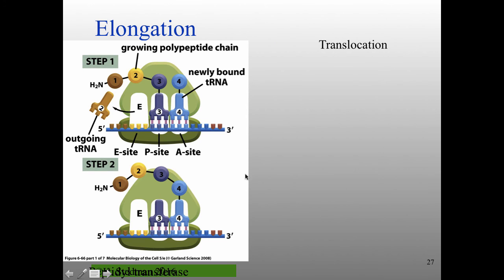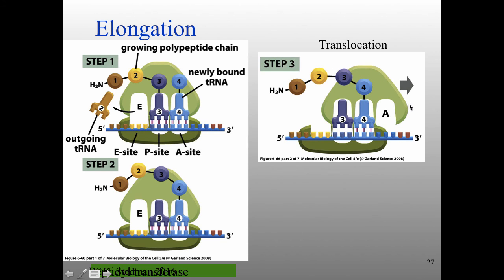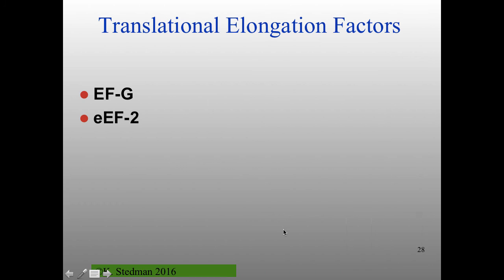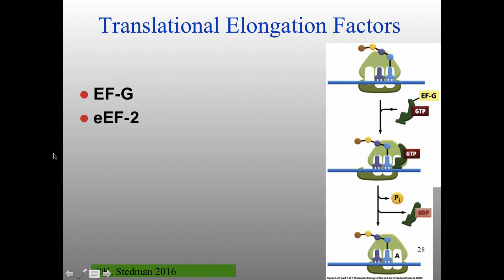Here's that process in a slightly different way. The polypeptide chain is attached to the tRNA in the P site. Here's the tRNA bound in the A site. Transpeptidation takes place, then translocation — movement of the ribosome relative to your RNA. Now the tRNA that was in the A site is in the P site, the tRNA that was in the P site is in the E site, it can be removed, and you continue along through the process.